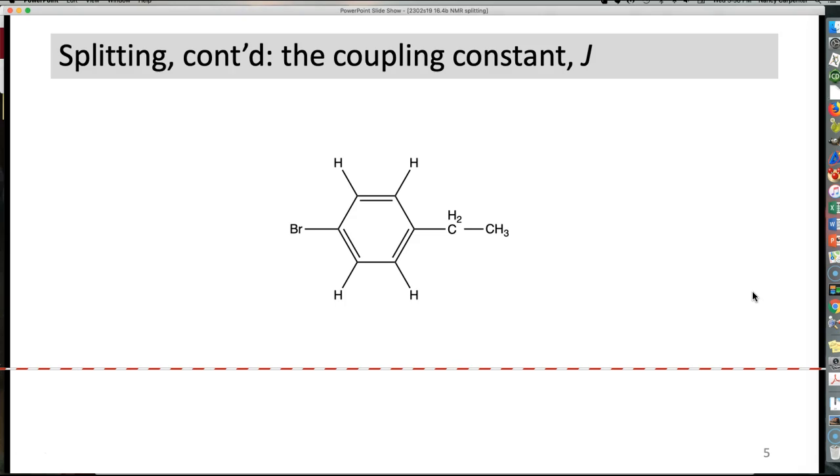Now, all these pretty patterns when we have N plus 1. As long as N plus 1 operates, we have one more piece of data to look at and that is called the coupling constant which is basically the gap that is between the patterns of your doublet, quartet, or triplet. So looking at this parabromoethylbenzene.